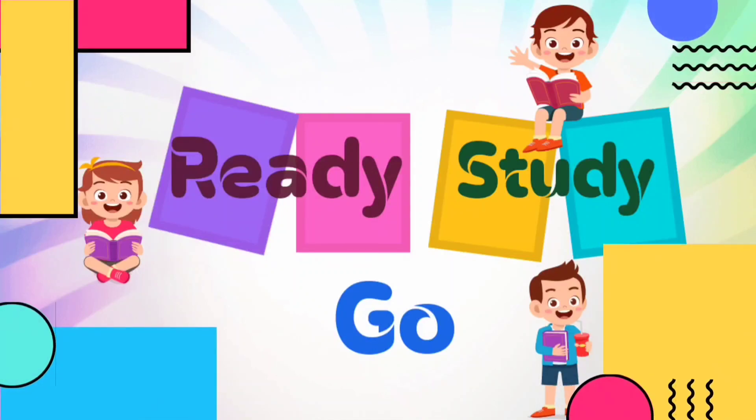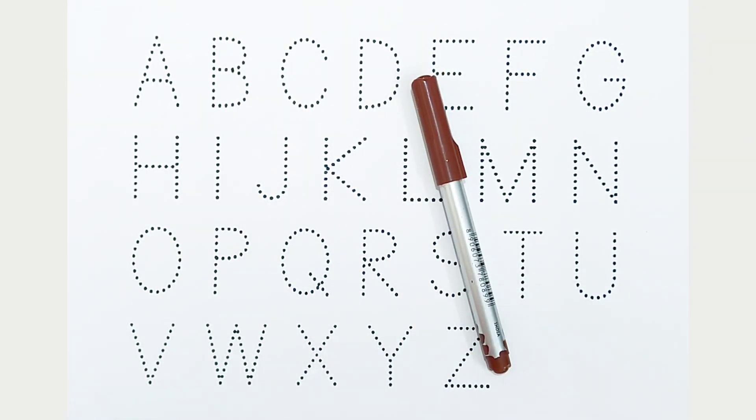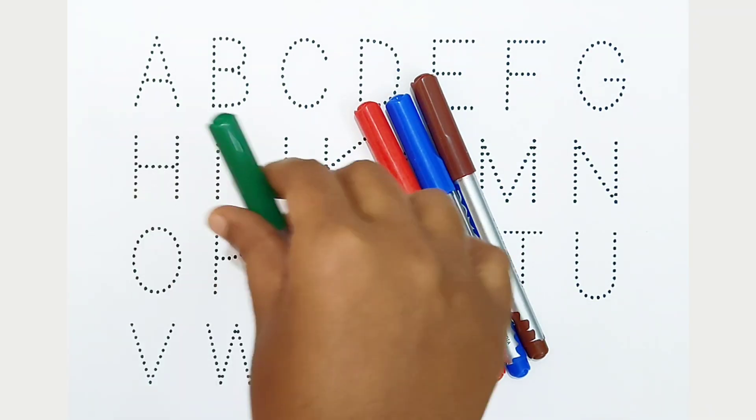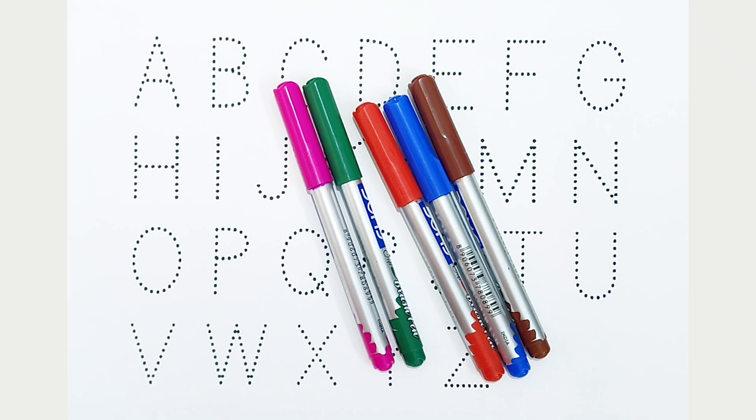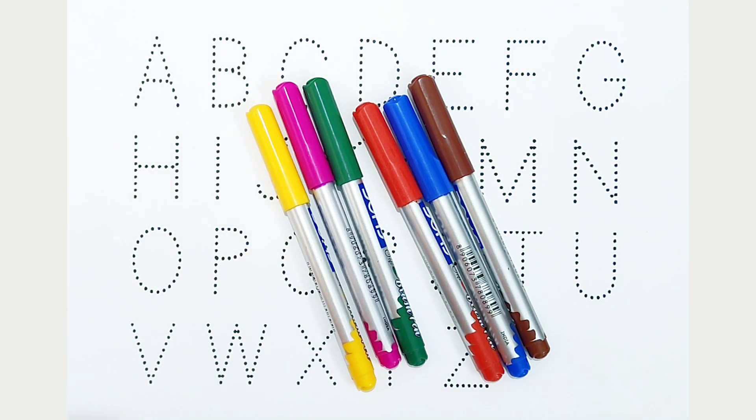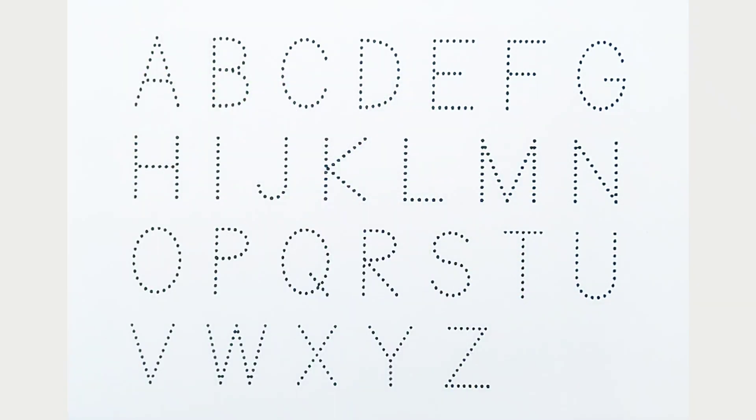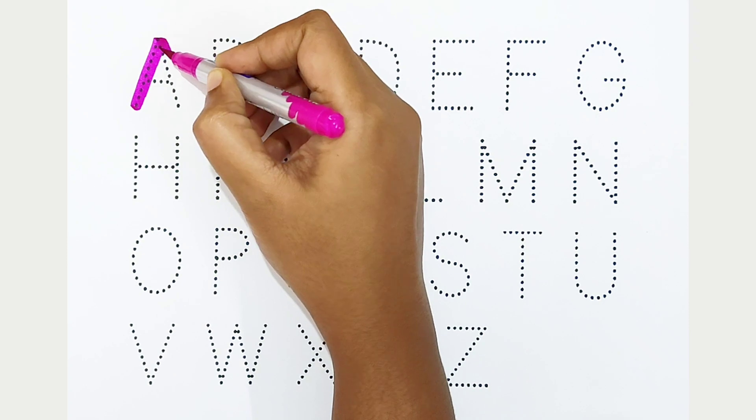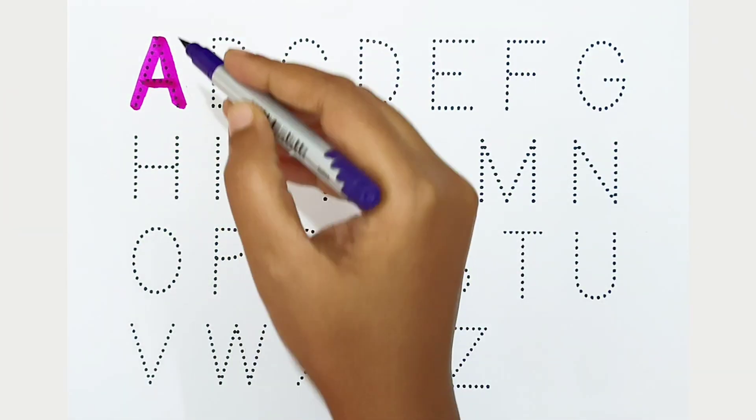Ready, study, go! Brown color, blue color, red color, green color, pink color, yellow color, black color. Hi kids, today we can learn the alphabets from A to Z. Let's begin.